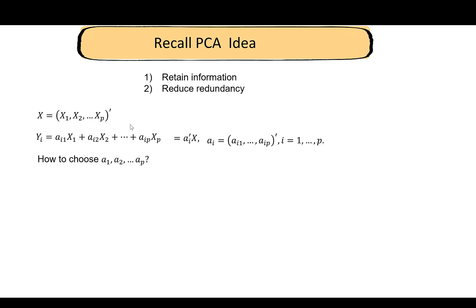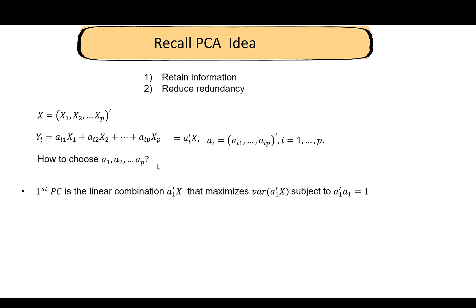Quick recap: we have a bunch of p variables. Y_i is the ith linear combination, and the coefficients are collected in vector a_i. We have p linear combinations total. The question in PCA is how to choose these coefficients. The first principal component is the linear combination a_1 transpose x that maximizes variance, subject to the condition that a_1 transpose a_1 equals 1 — meaning the norm of vector a_1 is 1.